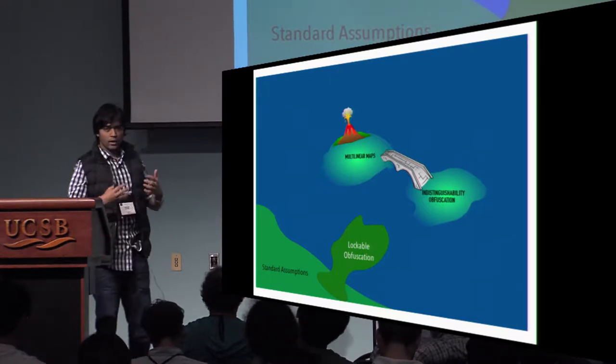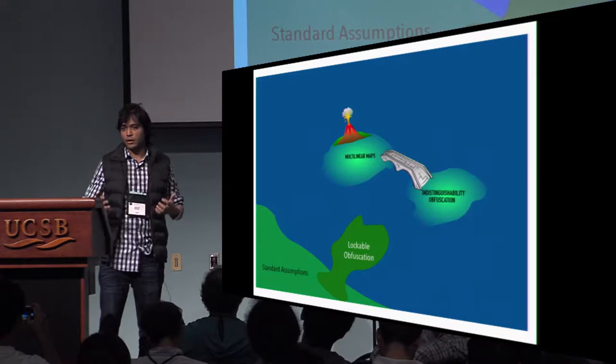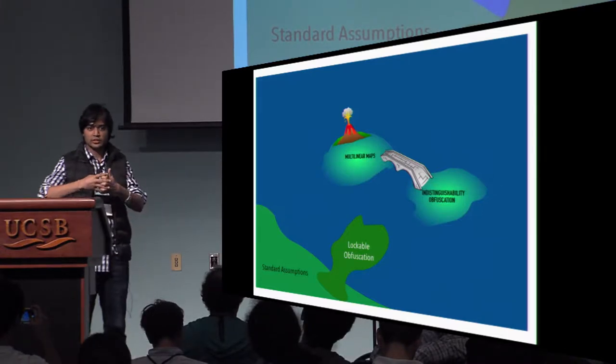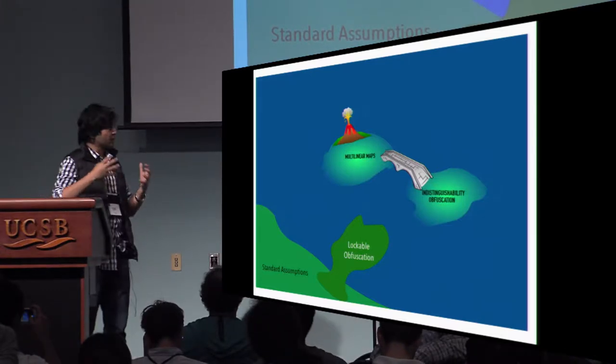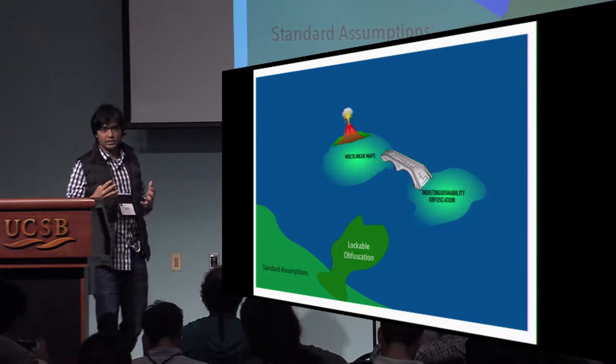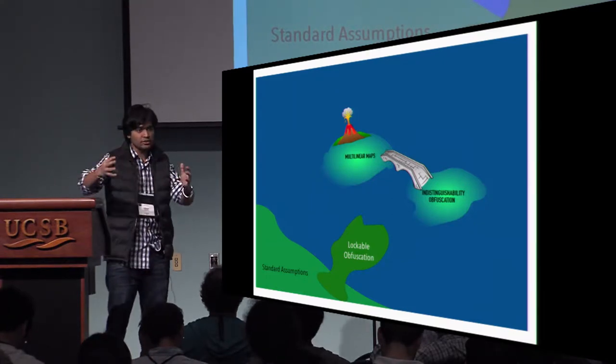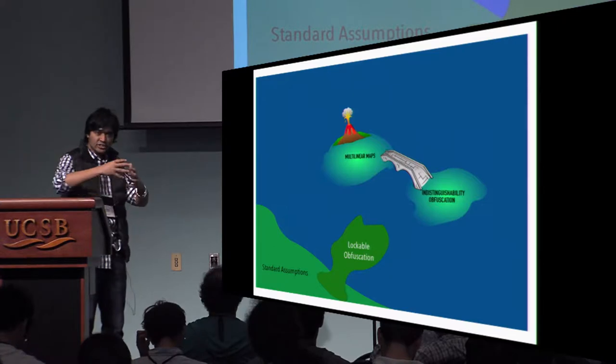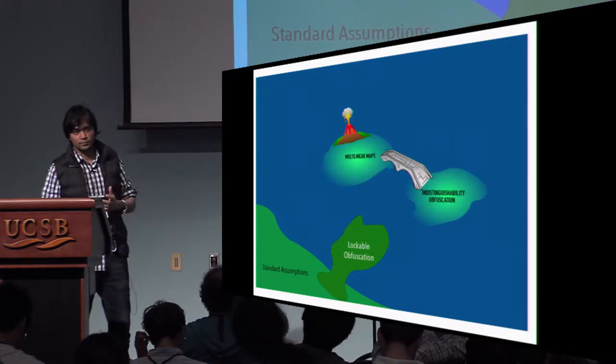In this work, what we try to do is we want to anchor ourselves to a standard assumption, which is learning with errors in this case, and try to see what we can explore in the area of obfuscation and different applications that we can achieve from this standard assumption.